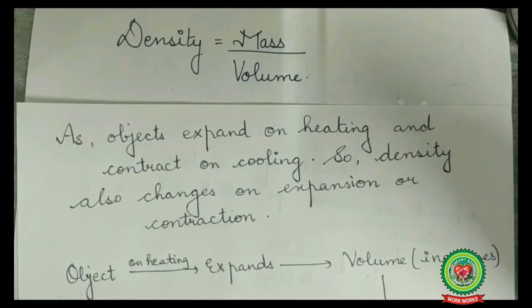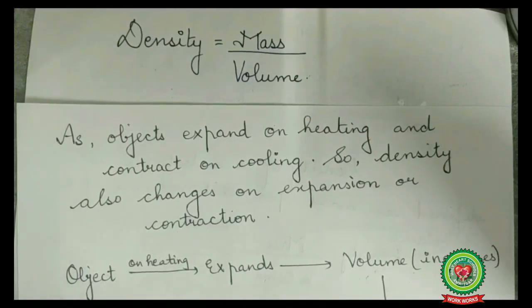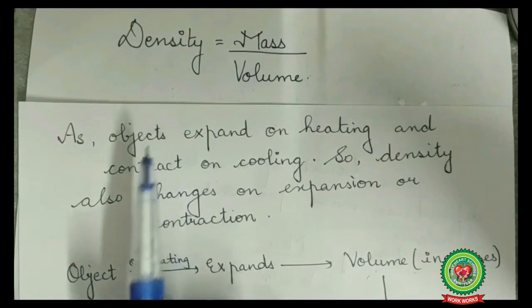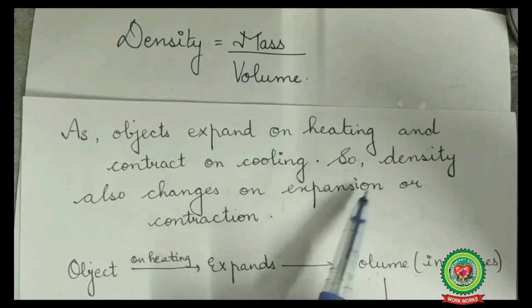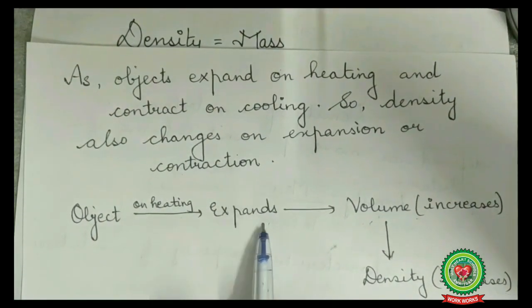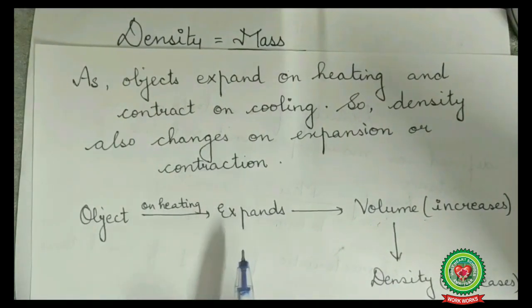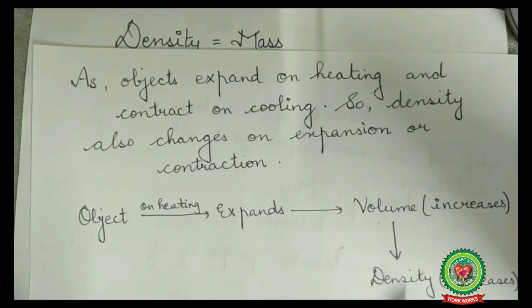How does density change with expansion or contraction of a substance? On expansion, the volume of an object increases as the space it occupies also increases. On contraction, the volume decreases. Since objects expand on heating and contract on cooling, density also changes. When an object is heated, it expands — its dimensions increase, space occupied increases, volume increases — and hence its density will decrease.